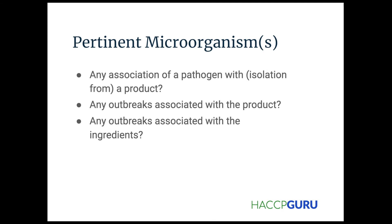Part of the supplier control process is making sure my supplier is performing tests on a frequent, per-batch basis and confirming that Salmonella is below the required threshold. That gives me confidence to receive and use that ingredient in my finished product. If I can't verify that ingredient or that lot, I'm not going to use it.